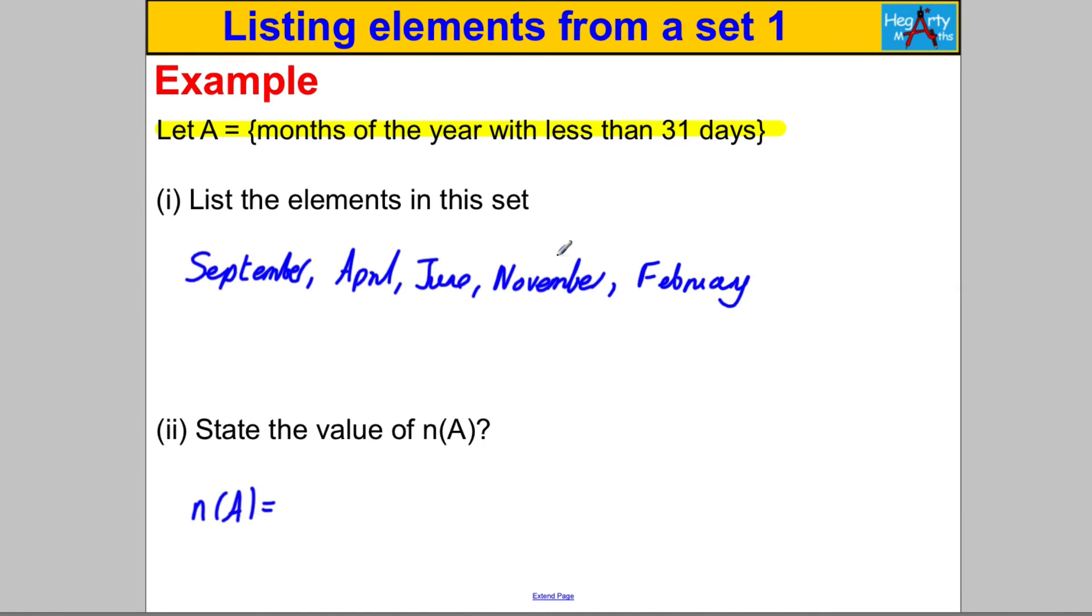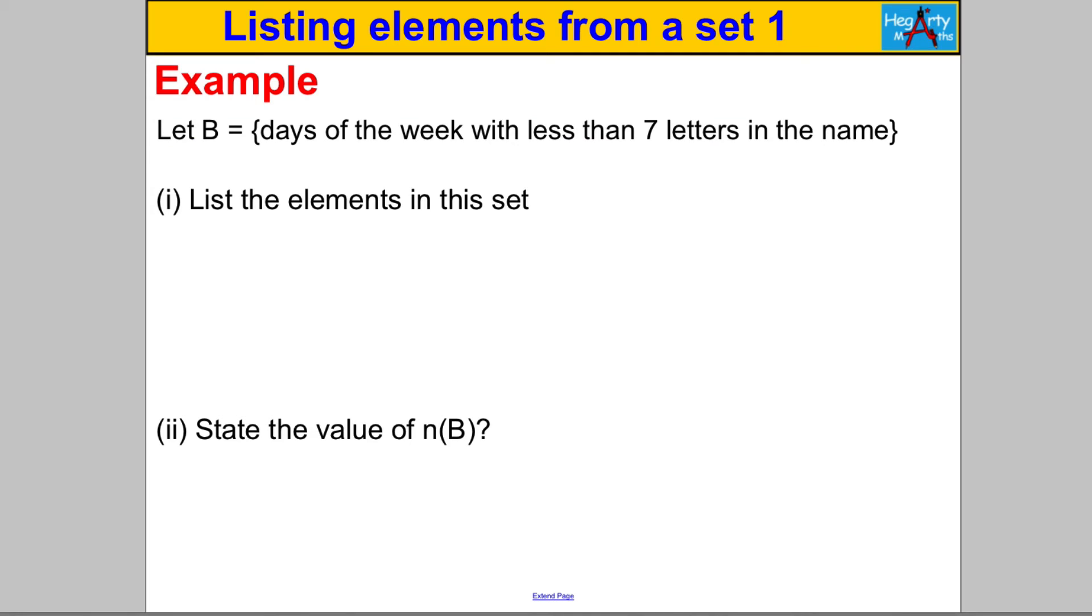Now n(A) means how many elements in the set. We have one, two, three, four, five - five such elements in the set and we're done. Next one, pause the video, have a go at this. In this case B is the set of days of the week with less than seven letters in the name. Part one, list the elements in the set.